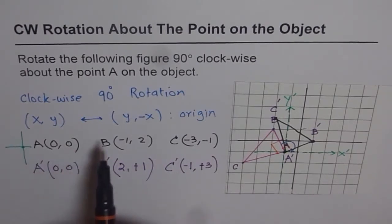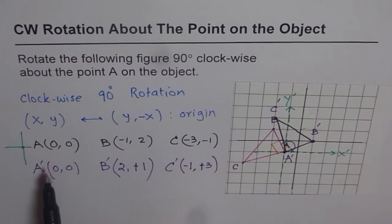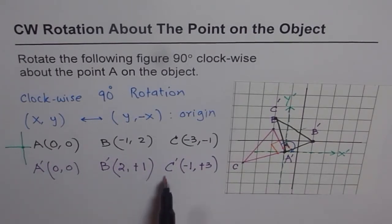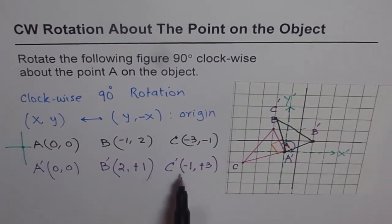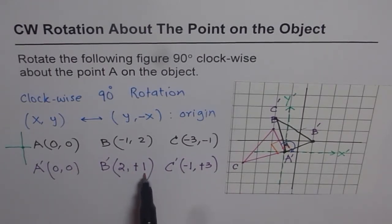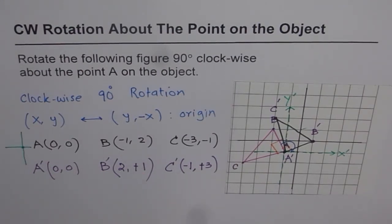When you perform the 90-degree rotation, A and its image remain at the same point. The other points change: you get the new coordinates by swapping x and y, then reversing the sign of y. That is how you obtain the rotated coordinates.